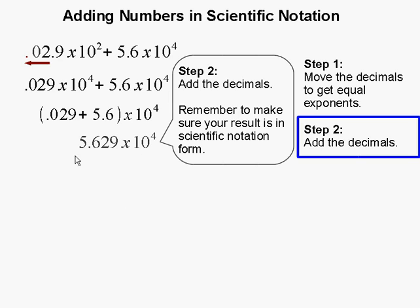And your resulting answer is 5.629 times 10 to the fourth. And make sure that your number stays in scientific notation as there's one decimal behind the first number. And this completes our problem.